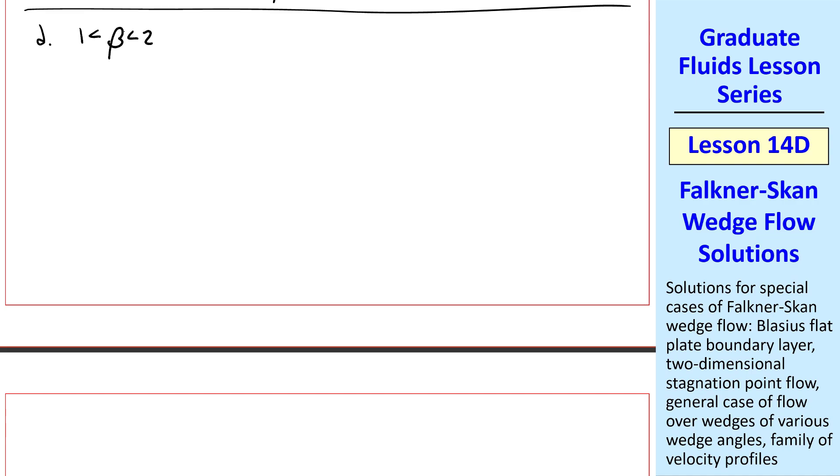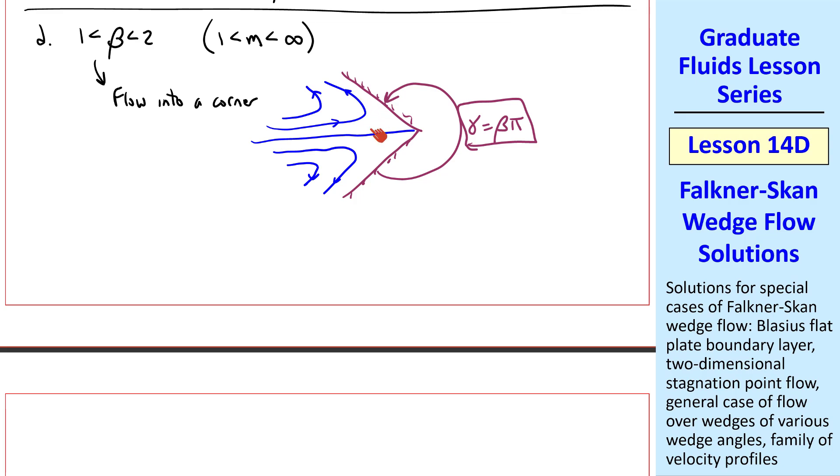Consider now beta between 1 and 2. This corresponds to m going from 1 to infinity. Without going into all the details, this is flow into a corner that looks something like this, with a streamline that comes in to the origin, and then the flow turns around like that. Of course, it's symmetric. This angle gamma is still beta pi, like it was previously. With this exponent beta, the outer flow accelerates rapidly from the stagnation point along x. And we're talking about the boundary layer growing this way. This would be the case with an extremely favorable pressure gradient, since capital U increases rapidly, and therefore pressure decreases rapidly with x. And I should have labeled x along this wall. This is another in our family of Falkner-Skan flows.